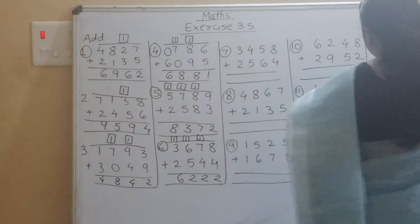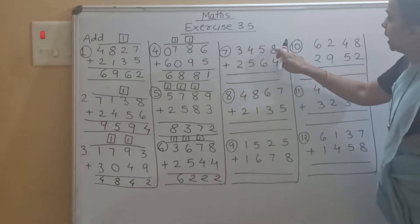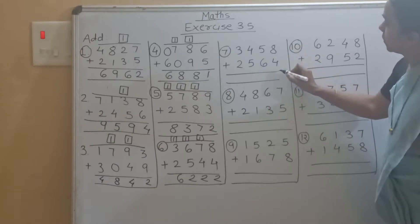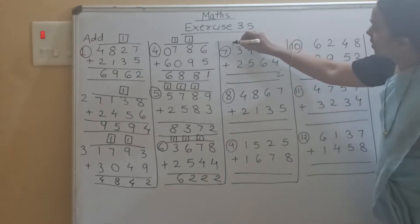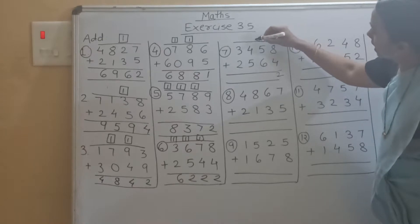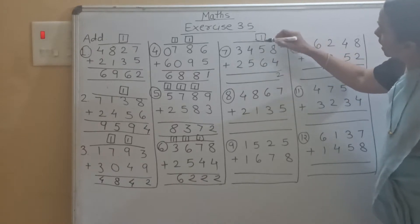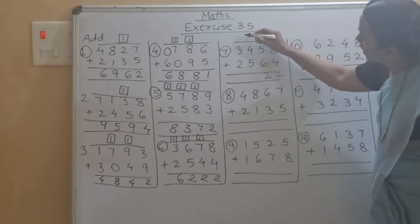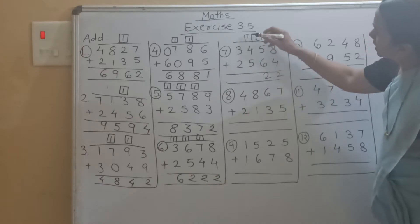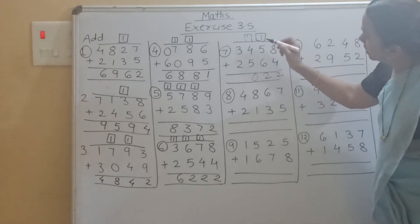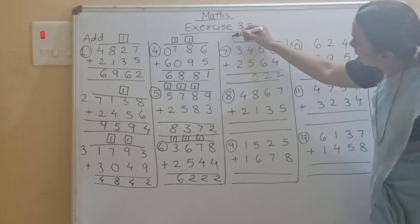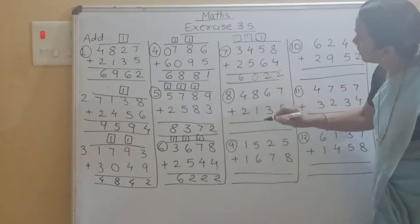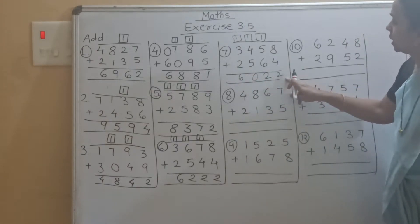Now see the seventh example: 3458 plus 2564. So 8 plus 4 is 12, carry 1. Then 5 plus 5 is 10, carry 1. Write down here. Then 3 plus 1 is 4, 4 plus 2 is 6. So the answer is 6222.